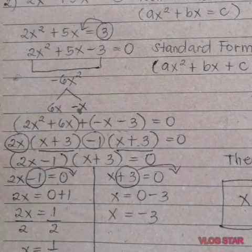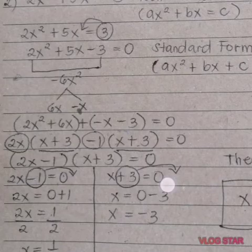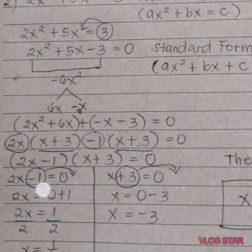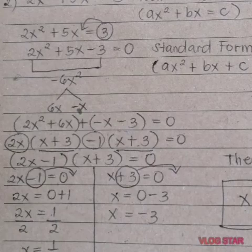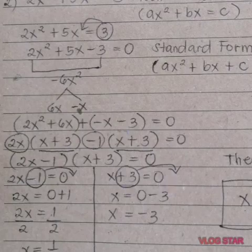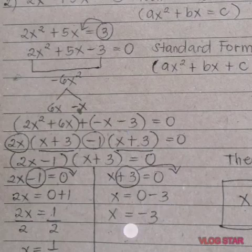Equate both factors to 0. For 2x minus 1 equals 0: transpose negative 1 to the other side — it becomes positive 1, so 2x equals 1. Divide both sides by 2, since the coefficient of x is 2. Therefore, x equals one half. For x plus 3 equals 0: transpose positive 3 to the right side — it becomes negative 3. Therefore, the value of x is negative 3.